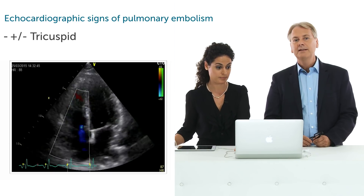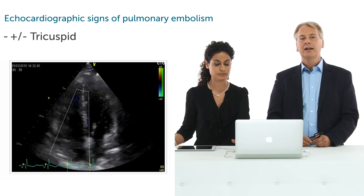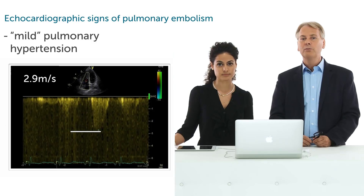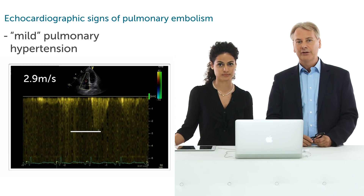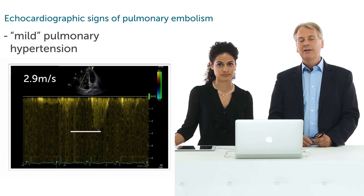So don't be deceived — you cannot exclude pulmonary embolism if you do not have tricuspid regurgitation. And if you look at the velocity across the signal, you see it's only 2.9 meters per second.